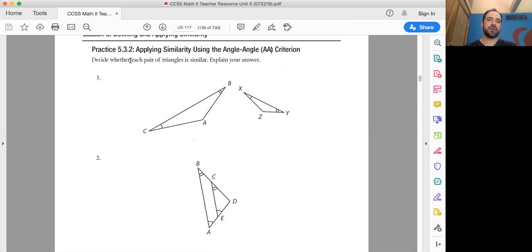So looking at here, decide whether each pair of triangles is similar, explain your answer. Okay, so if I look at this, these are gonna be pretty straightforward because it's angle-angle criterion. So first off, this tick mark for angle C and angle X is saying that those angles are the same.